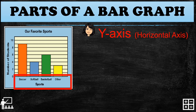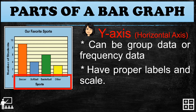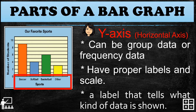Next is the y-axis, or the horizontal axis. It is called the horizontal axis because the data is written on the horizontal portion. The y-axis can show group data or frequency data — in this example, it shows group data of sports. It should have proper labels. A label tells us what kind of data is shown.